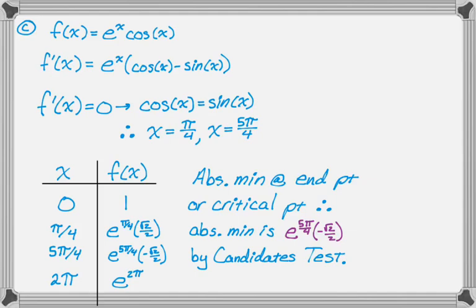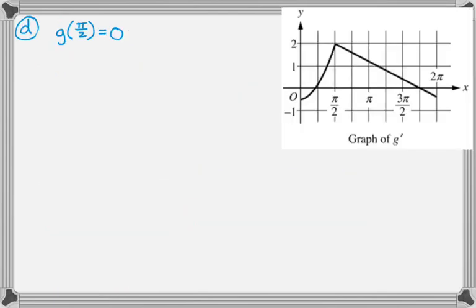So let's move on to the next part, which actually introduces another function called g of x. It's differentiable. We're given the graph of g prime, and we're told that g of pi over 2 is equal to 0. And if you've been doing a bunch of problems, you know this probably means we're going to use L'Hôpital's. And it turns out this is a question about a limit. We want the limit as x approaches pi over 2 of f of x over g of x.